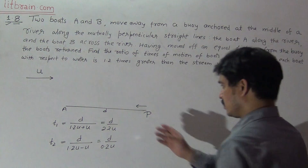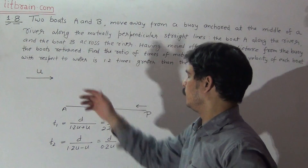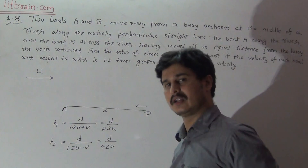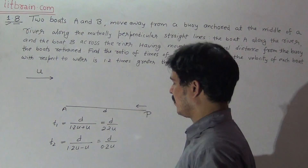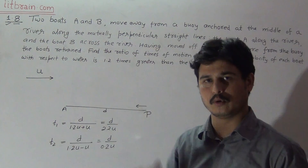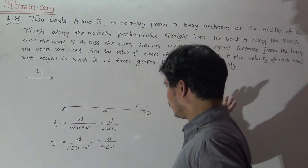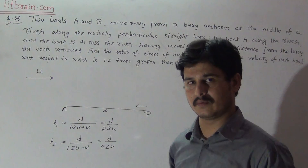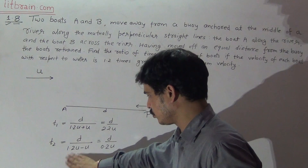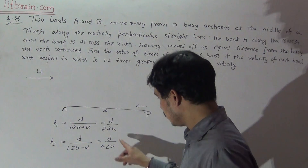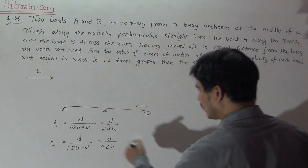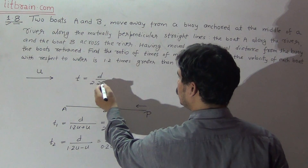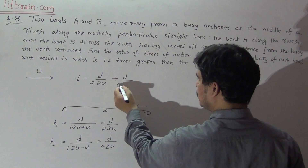In the return journey, you are moving opposite to the direction of river flow, so your effective velocity will be the difference of the boat velocity and river velocity. Therefore, the time for the return journey is D over 0.2U. The total time for boat A is T = T1 + T2, which equals D over 2.2U plus D over 0.2U.